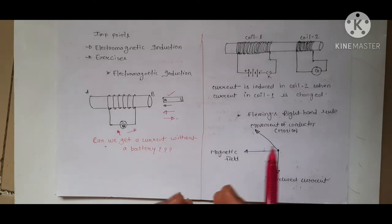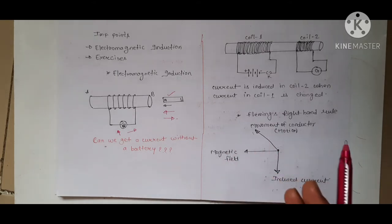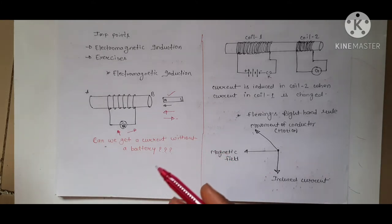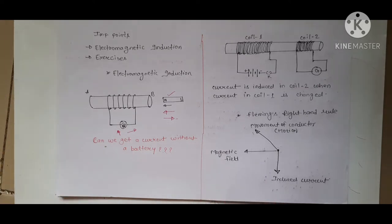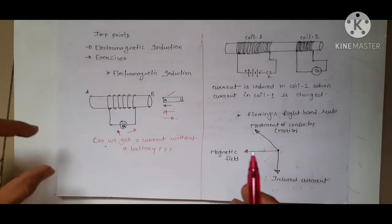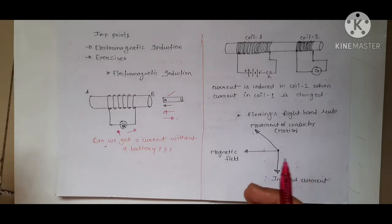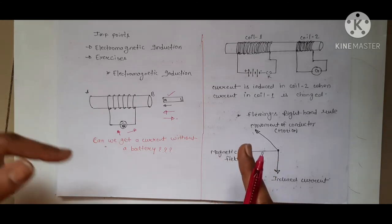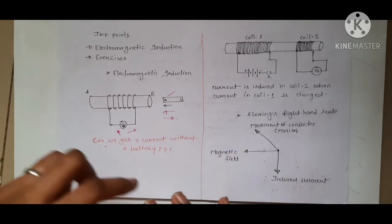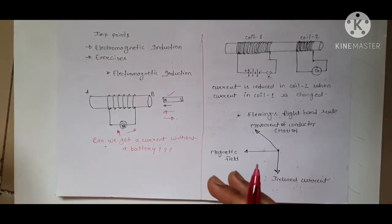So what we have done is that the movement of the magnet has produced current. This current is called the induced current, and all these phenomena are called electromagnetic induction. So the current generated is called induced current and the process is called electromagnetic induction.